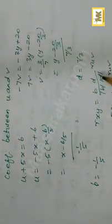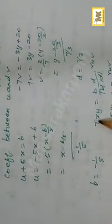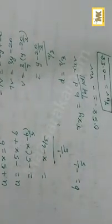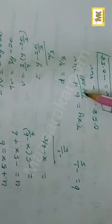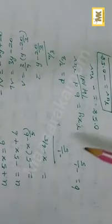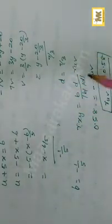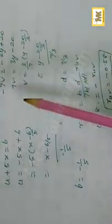Using the formula: r_xy = (modulus of b × modulus of d) × r_uv — this works the same way. The correlation coefficient between x and y r_xy = 0.5 (given as 0.58 in substitution). Substituting −1/5 and 7/3: modulus of (−1/5) and (7/3) cancel, giving −0.58. The signs are the same, so the answer is negative: −0.58.